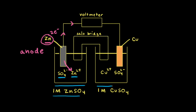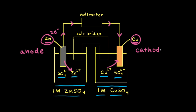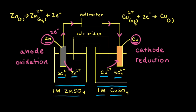The compartment on the right is a beaker containing a one molar solution of copper sulfate, so there are copper two plus ions and sulfate anions in aqueous solution. Electrons moving through the wire reach the surface of the copper electrode, where copper two plus ions gain two electrons and are reduced to form solid copper. The electrode where reduction takes place is called the cathode, so the copper electrode is the cathode for this cell.